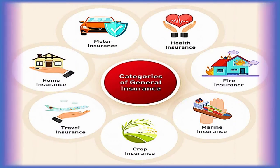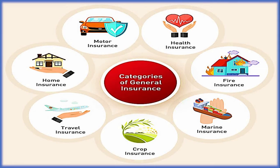As seen in this picture, the categories of general insurance include motor insurance, home insurance, travel insurance, crop insurance for agriculture purposes, marine insurance, fire insurance, and the most popular — health insurance.